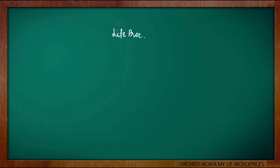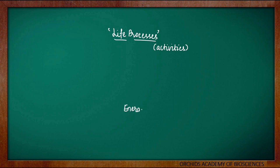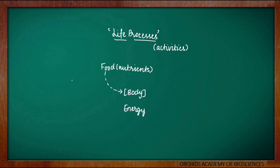So, what are these life processes? We know that in order to remain alive, we need to perform certain activities which are essential for survival. These activities which are performed by living organisms which are essential for their survival or sustenance of their life are called as life processes. To perform various activities in our body, we require energy. Our body gets the energy from the food that we eat because it contains various nutrients. So, the process of obtaining or utilizing these nutrients is called as nutrition, and this is the first life process.